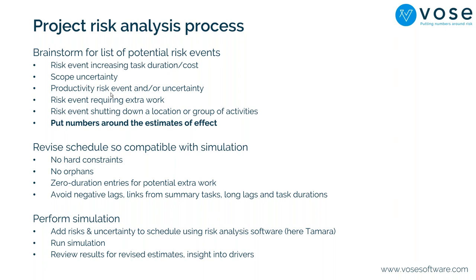You also need to assign values for the range of impacts on your project. Ideally you consider the task most affected and estimate how much extra time it would take — typically using a three-point estimate of minimum, most likely, and maximum. The maximum is difficult to estimate as it can be almost infinite. We prefer to ask for the P90 — there's a 90% chance the delay would be less than a certain amount. This is an easier question to answer than asking for a pure maximum.